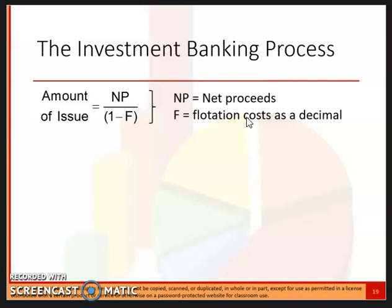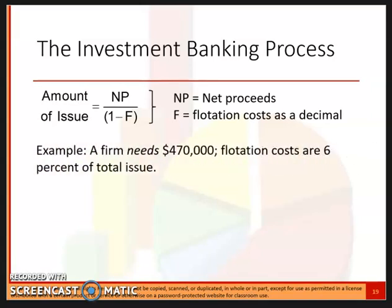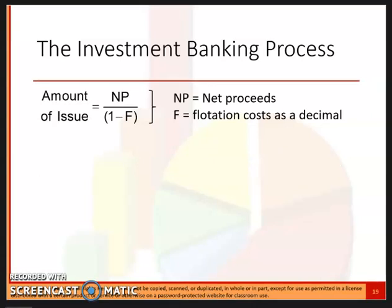In some homework problems, there are additional flotation costs or issuance costs. When working those problems, you will add any additional costs to the numerator. There are worked examples available. So the formula is: net proceeds divided by one minus the issuance cost percentage.